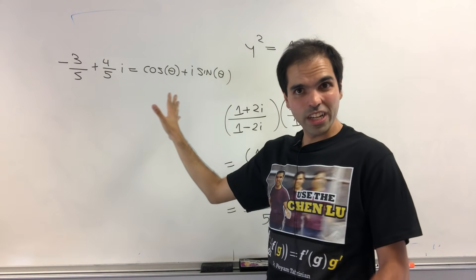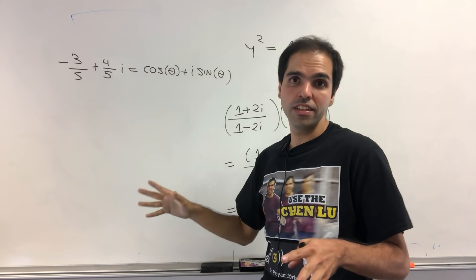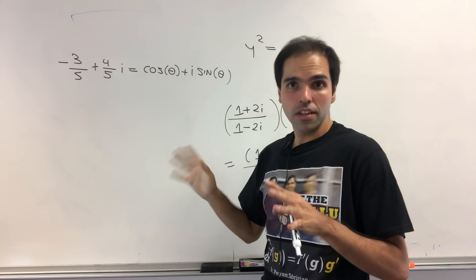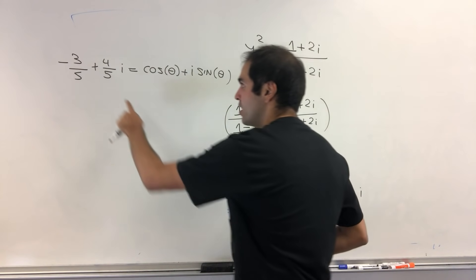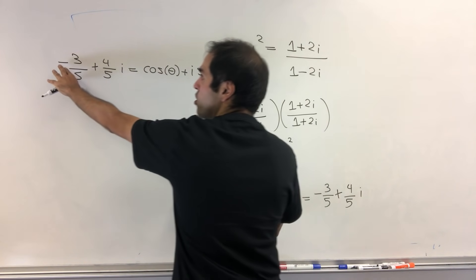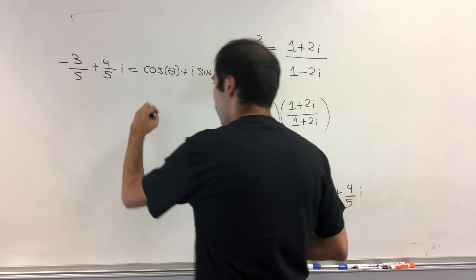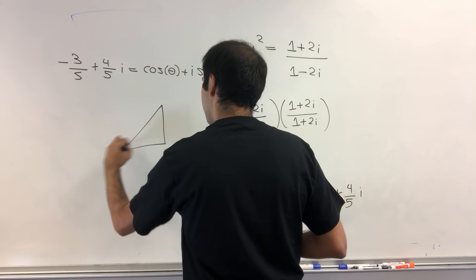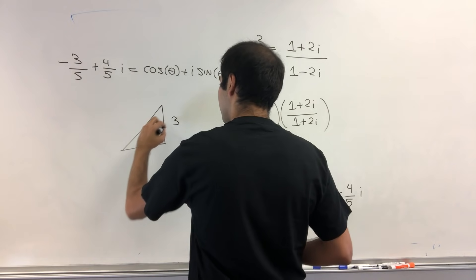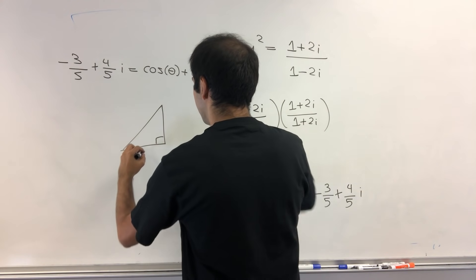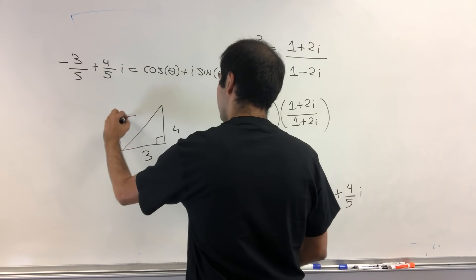All right, and unfortunately, we don't have a completely explicit expression for this, but still quite a satisfying one, because if this were a plus, it should remind you of a 3, 4, 5 triangle. Kind of like that. So this is 3, maybe this is 3, this is 4, and this is 5.